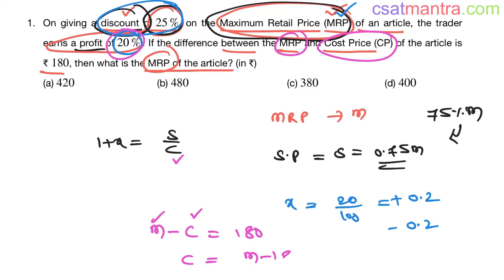See, this problem has three sentences. On giving a discount of 25% on the MRP, from this we are getting selling price. The trader earns a profit of 20%, this is the second sentence, we got x here. If the difference between MRP and cost price is 180 rupees, that's the third sentence.